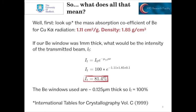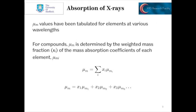In actual fact, the beryllium windows used in sealed X-ray tubes are only an eighth of a micron thick — much, much thinner than this. If you were to perform the calculation with the correct values, you would see that the transmitted beam intensity is almost 100% — effectively 100%. And so that's why beryllium is used: because it lets through all of the X-rays striking those windows. These mu_M values have been tabulated for elements at various common wavelengths used in X-ray laboratories.